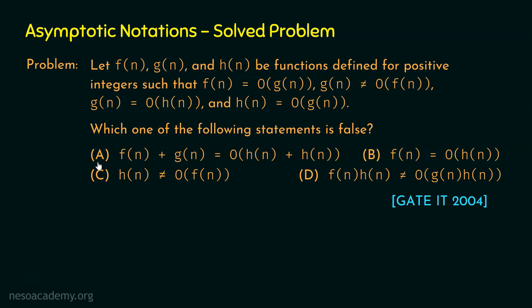Is it statement A: f(n) + g(n) = O(h(n) + h(n))? Is it statement B: f(n) = O(h(n))? Is it statement C: h(n) ≠ O(f(n))? Or is it statement D: f(n) × h(n) ≠ O(g(n) × h(n))?